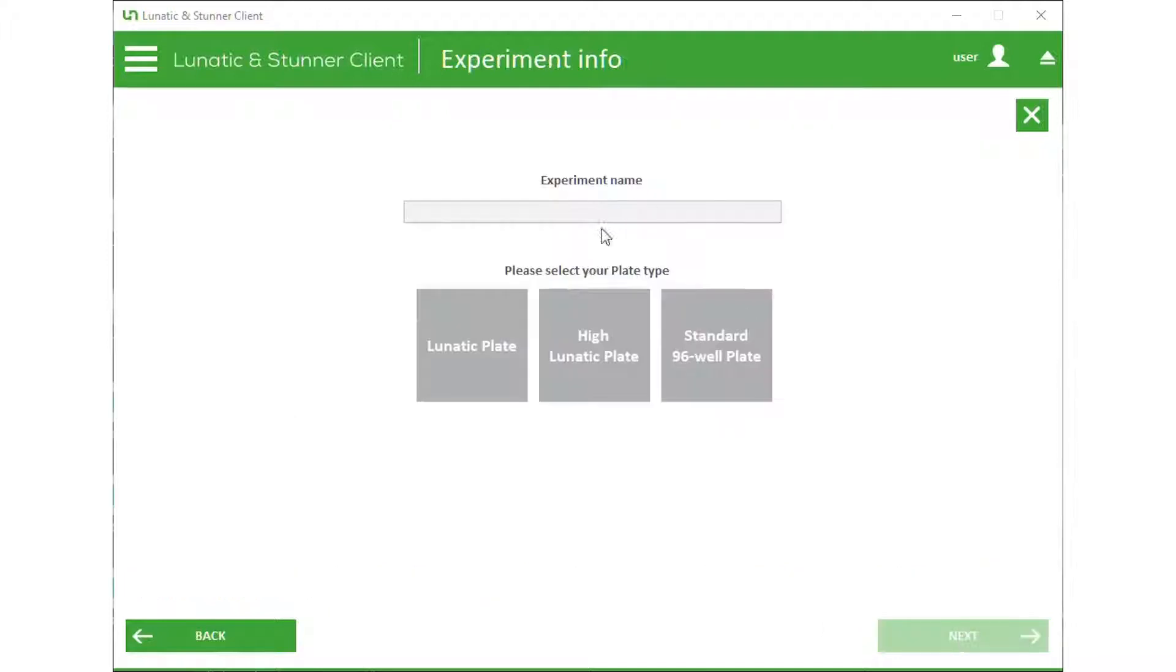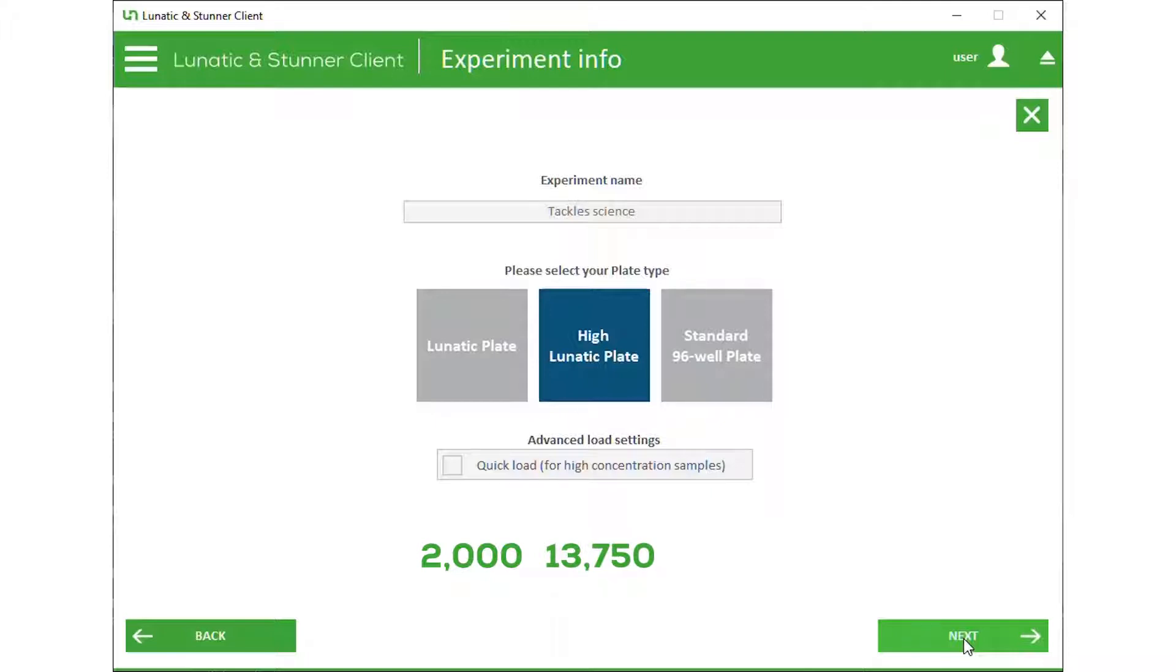Now we name the experiment and select the plate type. Lunatic plates have a maximum range of about 2,000 nanograms per microliter and high Lunatic plates have a maximum of 13,750 nanograms per microliter.